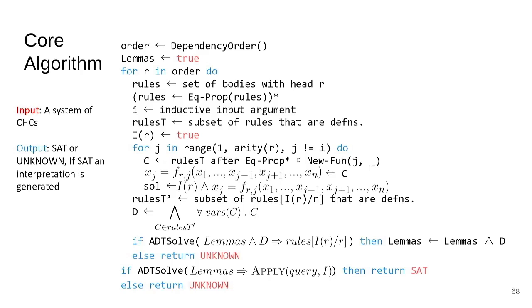Once we've gone through all the predicates, we have a full interpretation. We invoke an ADT solver and ask if the lemmas imply the query, supplying its interpretation. If so, we return sat; otherwise we return unknown.